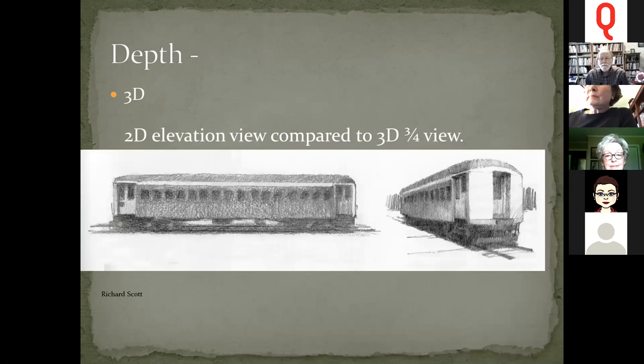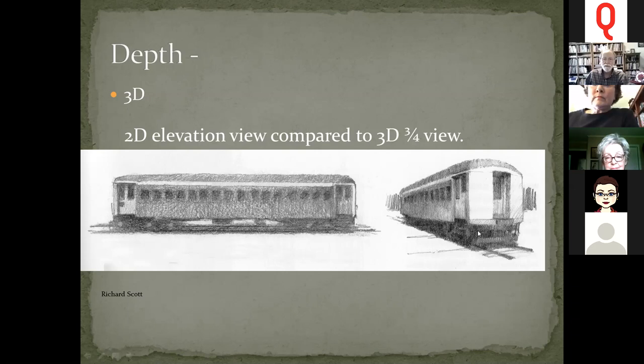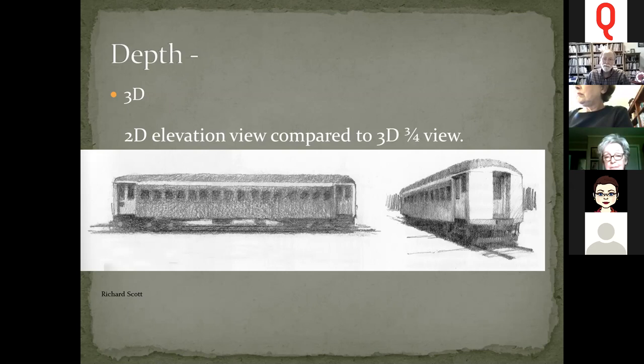Two-point perspective always increases depth compared to a straight flat elevation view. When looking at a railroad car flat on, you have no idea how wide it is. By turning it on a corner, you get two-point perspective — the lines slope to eye level on both sides — and you can see the depth and get a much better idea of what that object actually looks like.